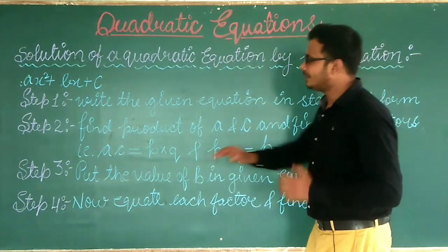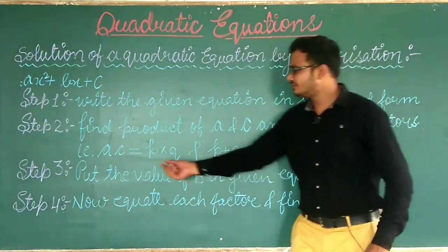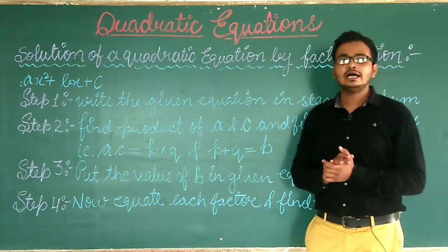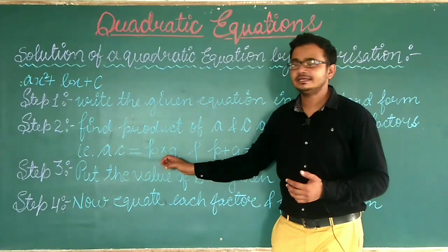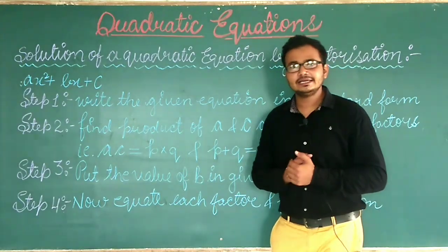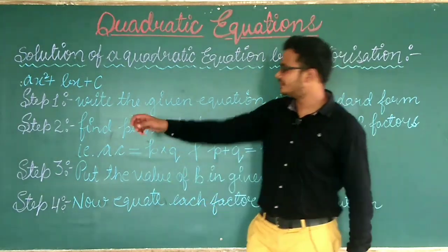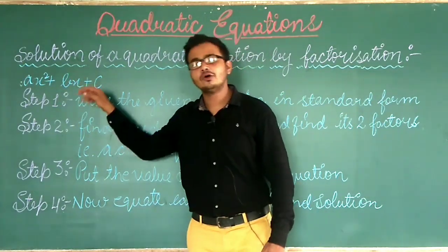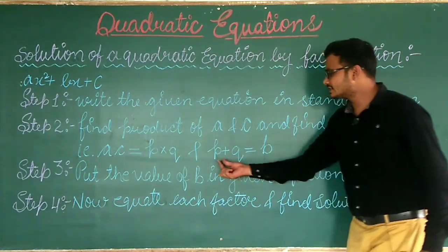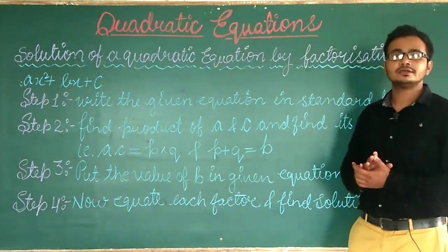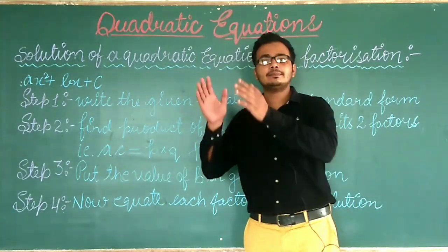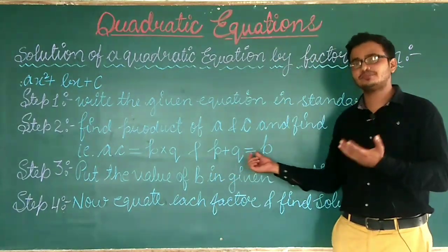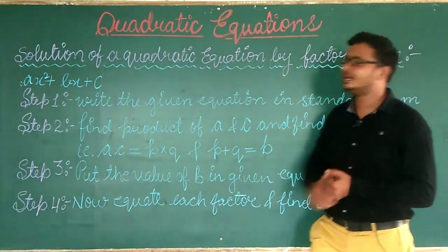Let's say when we multiply A and C, we will get P into Q. Now we have to find P and Q such that when we add or subtract those numbers, we get B — the coefficient of X, the middle term. So P plus Q is equal to B. Simple concept: after multiplying A and C, factorize, and arrange the factors so that on addition or subtraction we get B.